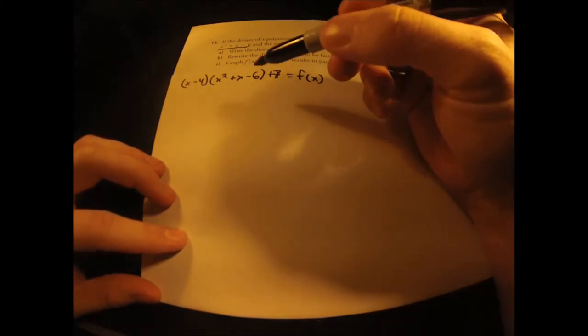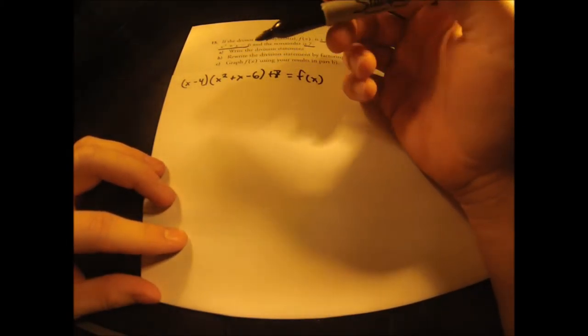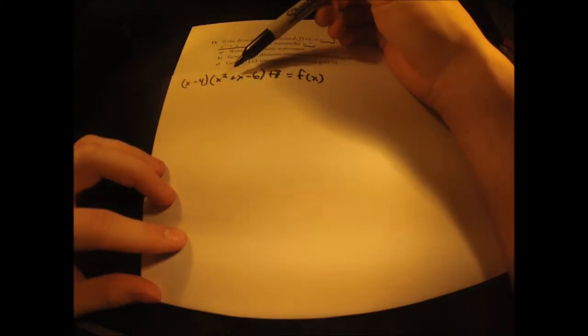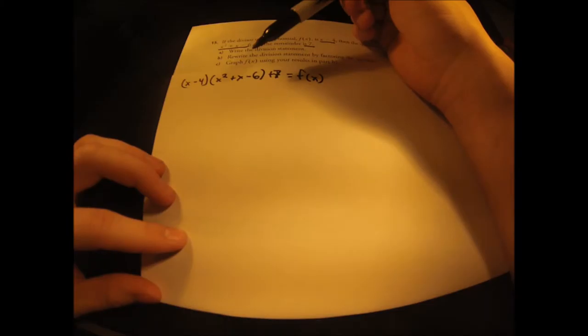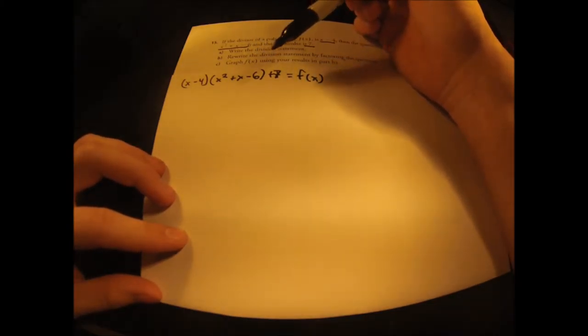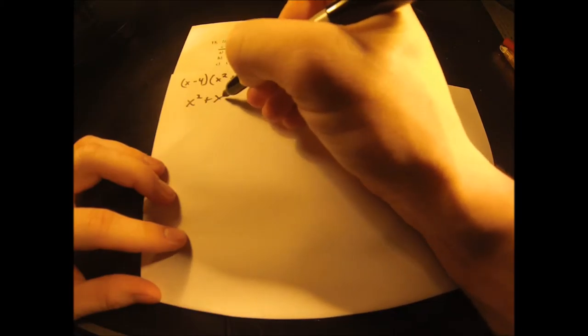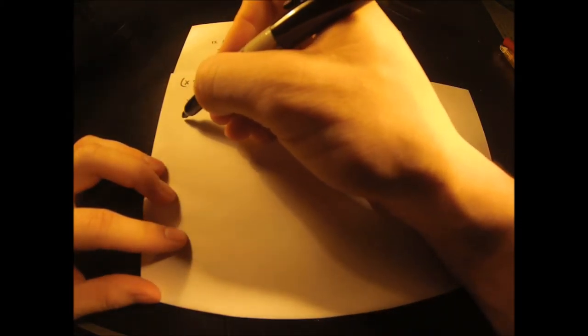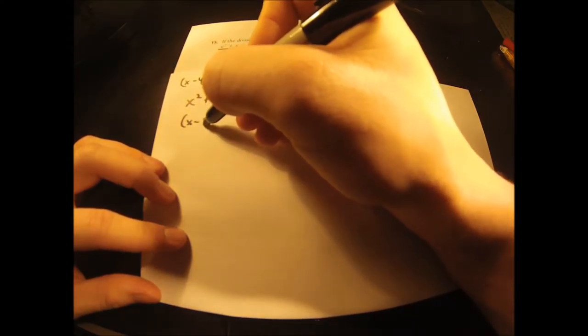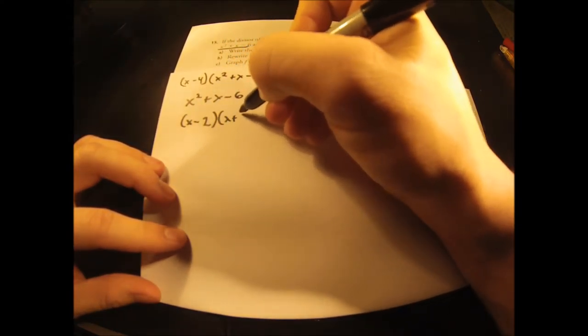We are simply going to factor the quotient. It's a simple trinomial and not that difficult. At the end we will substitute the factored form back in to create something that looks like the factored form of this function. So: x squared plus x minus 6 equals x minus 2 times x plus 3.